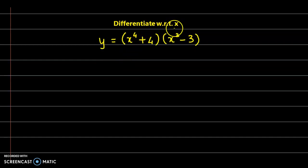The question is differentiate with respect to x, and the function here is y equals x raised to 4 plus 4 times x square minus 3. So we write down the given function: y equals x raised to 4 plus 4 into x square minus 3.